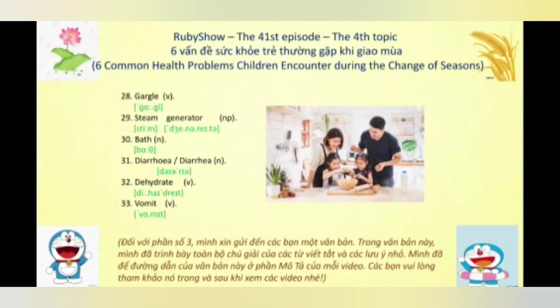Và từ số 33 là động từ 'vomit,' nhấn âm 1. Động từ này có 4 nghĩa: nghĩa số 1 là nôn hoặc mửa; nghĩa số 2 là tuôn ra hoặc khạc ra hoặc phun ra; nghĩa số 3 là nói ra hoặc chia sẻ ra hoặc tuôn ra; và nghĩa số 4 là bị buồn nôn hoặc bị mửa.